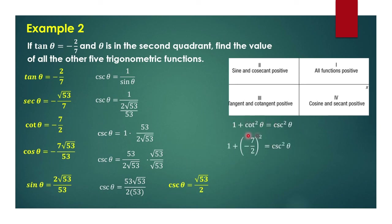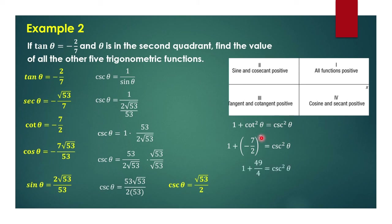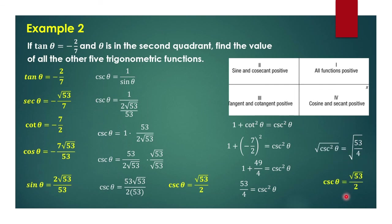We can also use an alternate strategy to get cosecant squared theta since we know the value of cotangent theta. By the Pythagorean identity, cosecant squared theta equals 1 plus cotangent squared theta. So we have 1 plus the square of negative 7 over 2, giving 1 plus 49 over 4, which simplifies to 53 over 4. Taking the square root of both sides, cosecant theta is equal to square root of 53 over 2.